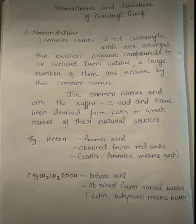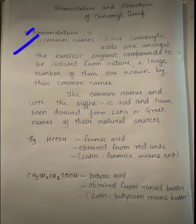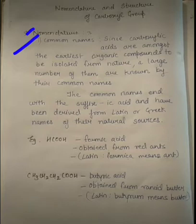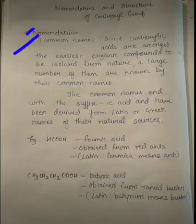Let us see about the common names. If we talk about the carboxyl group common names, we all know that carboxylic acids are among the earliest organic compounds, which are easily isolated from nature, and a large number of them are known by their common names. For example, acetic acid is commonly known as vinegar, and formic acid is associated with ant bites — the acid released by ants which we call formic acid.